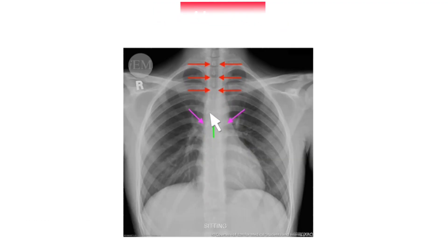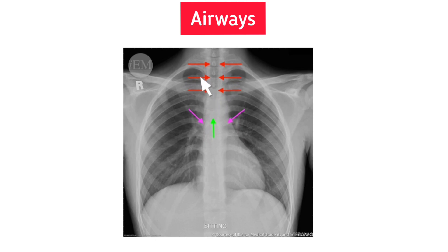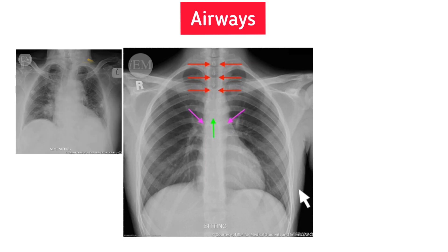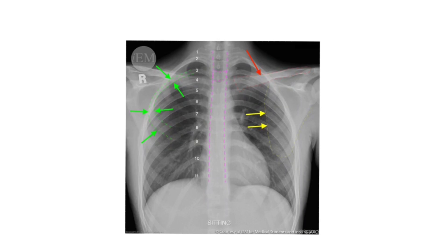Coming to airways: the red arrows represent the trachea, green arrows the carina, and pink arrows the left and right main bronchus. The trachea, carina, and both main bronchi are called the upper airway and should be visible on the AP view. Look for any deviation of the trachea away from the midline. Introduction of air into one side of the chest cavity will cause that lung to collapse, pushing the trachea to the opposite side.